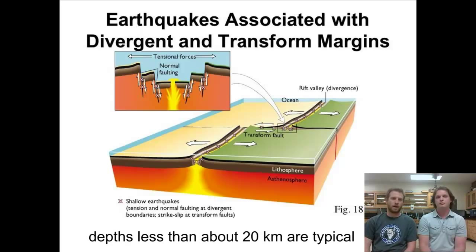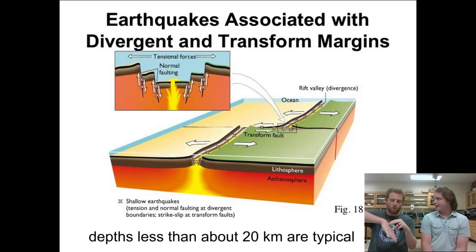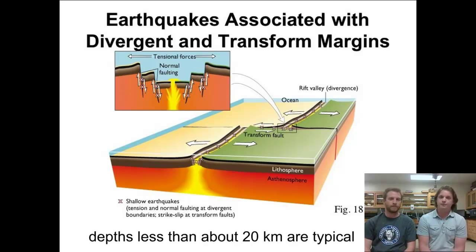And there's another type that we see when we're looking at divergent and transform boundaries. These are actually just really shallow earthquakes, only about 20 kilometers deep because there's no subduction. There's no plate driving down underneath the other one.